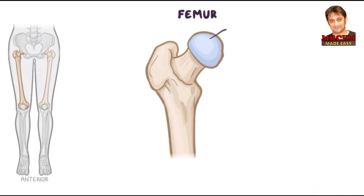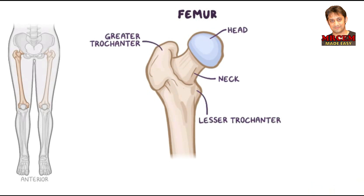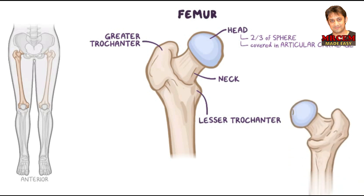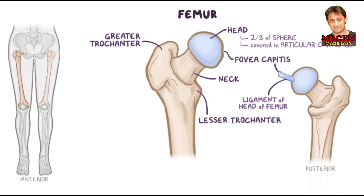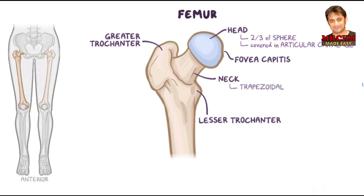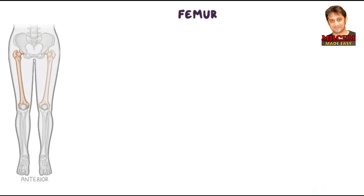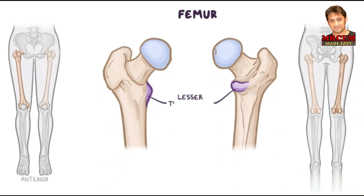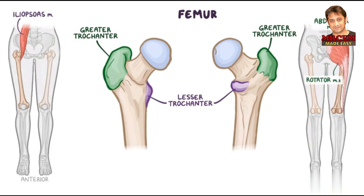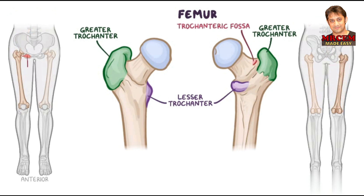The proximal femur has a head, neck, and the greater and lesser trochanters. The round head makes up about two-thirds of a sphere, is covered in articular cartilage, except for the fovea capitis — a pit where the ligament of the femoral head attaches. The neck is trapezoidal, with its narrow end supporting the head and its broader base continuous with the shaft. At the junction of the femoral neck and shaft are two large bumps called trochanters. The lesser trochanter is medial and inferior, where the iliopsoas attaches. The greater trochanter is lateral and superior, where the abductor and rotator muscles of the thigh attach. At its base is the trochanteric fossa, where the obturator externus, obturator internus, and superior and inferior gemellus muscles insert.